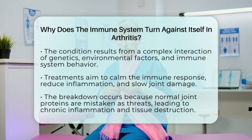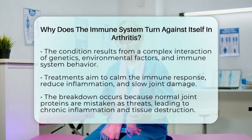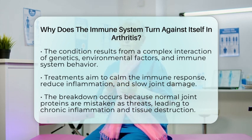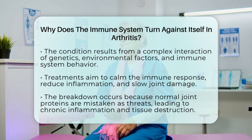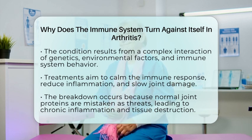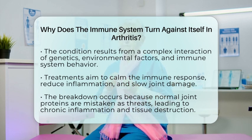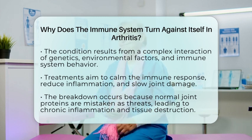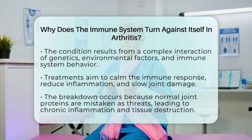In simple terms, the immune system starts attacking itself in arthritis because genetic predispositions and environmental exposures cause it to see normal joint proteins as threats. This breakdown in immune tolerance leads to chronic inflammation and joint damage. It's a miscommunication in the immune system that triggers this self-destructive process.